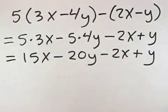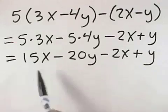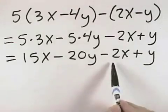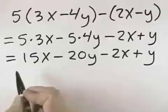The commutative property allows us to regroup so that we can put the 15x and the negative 2x together, and put the negative 20y and the positive 1y together.